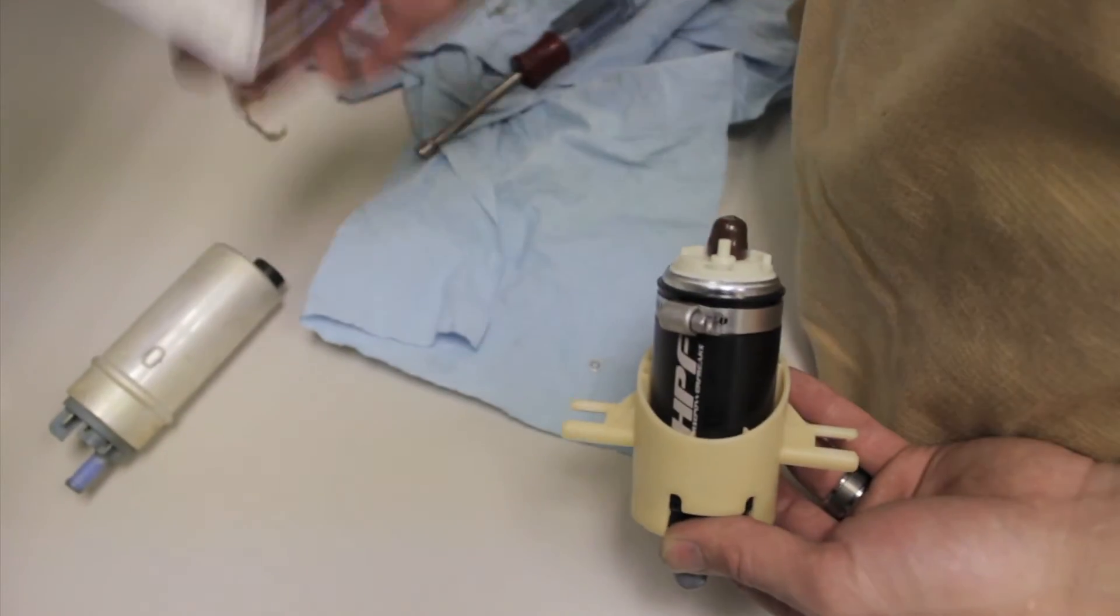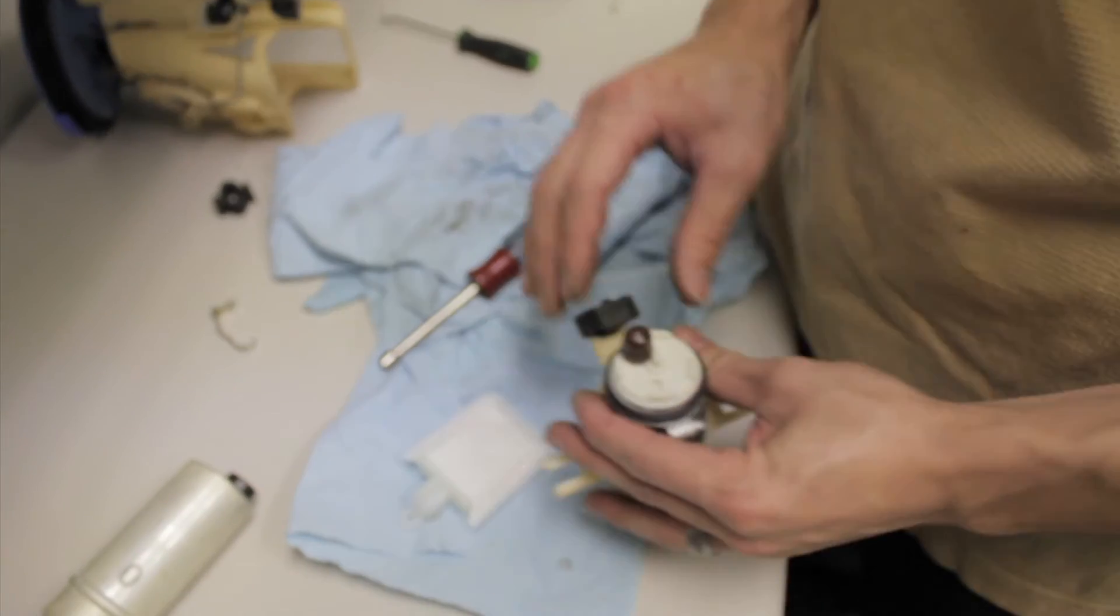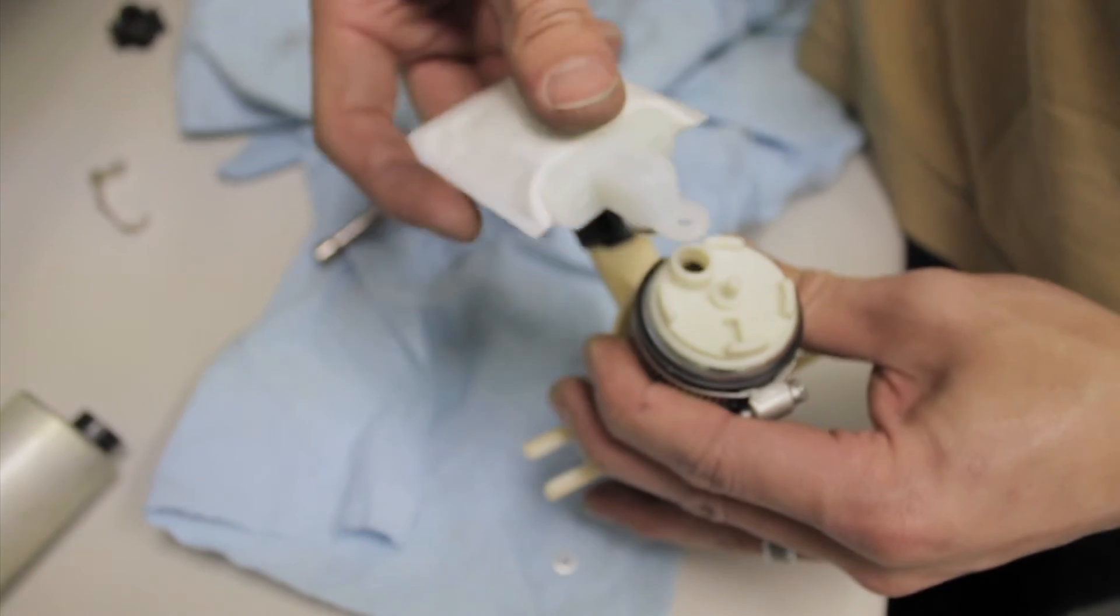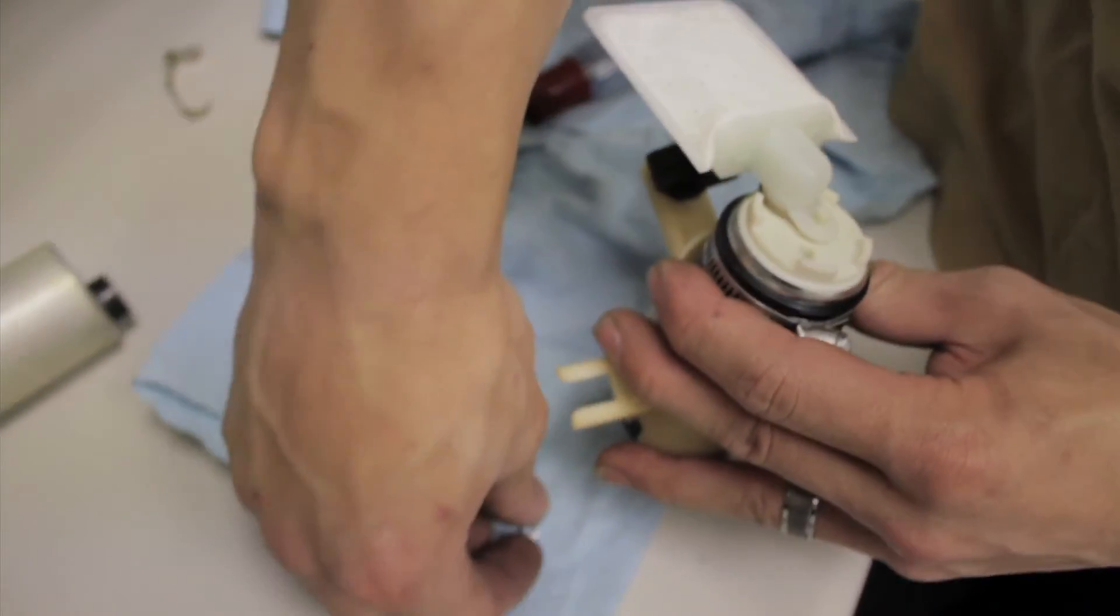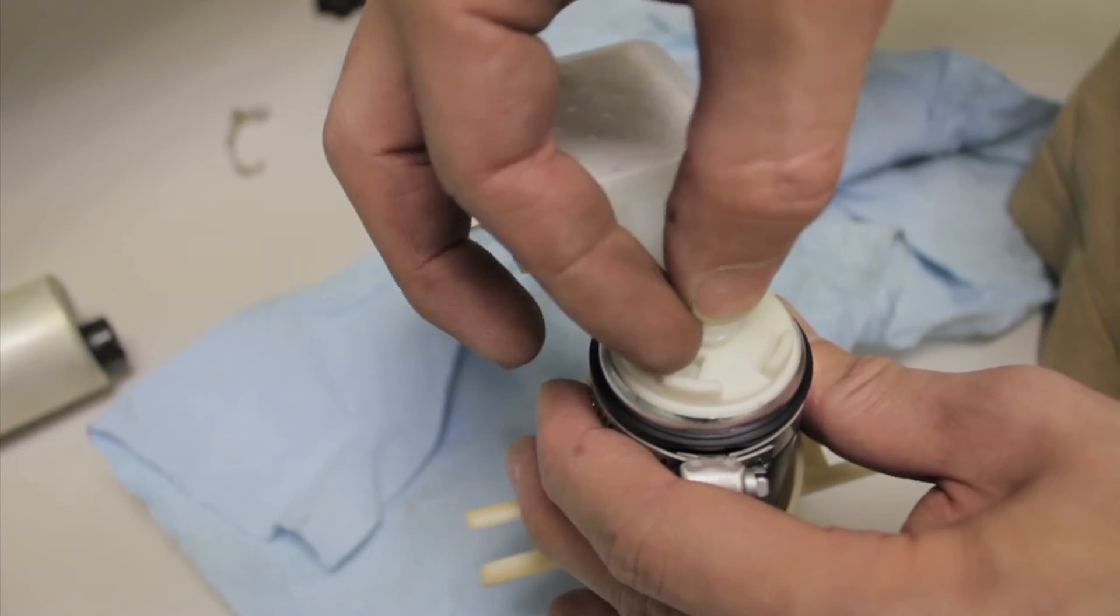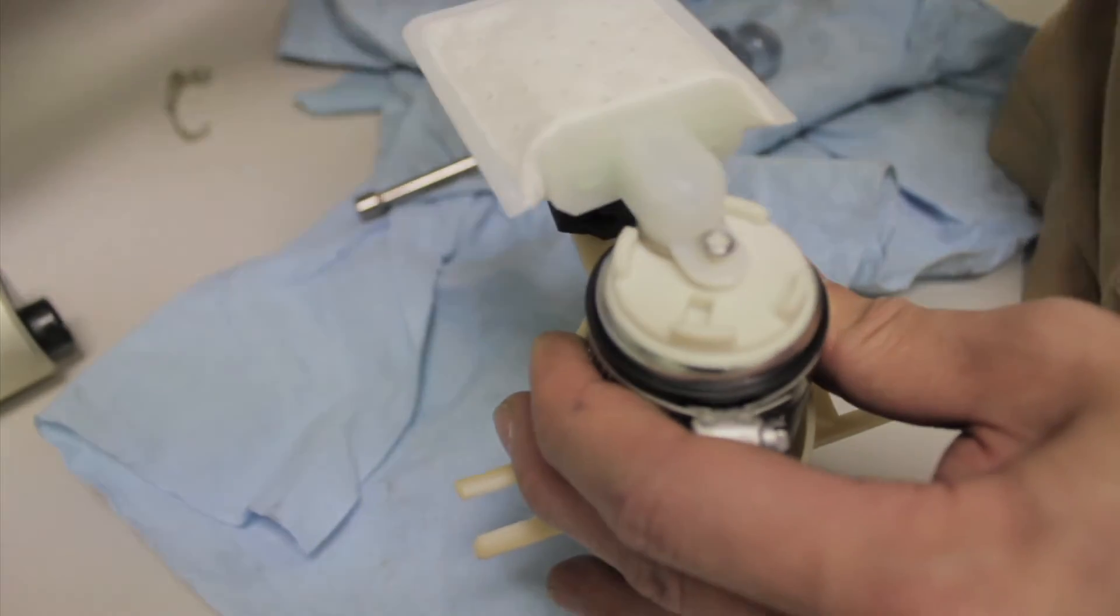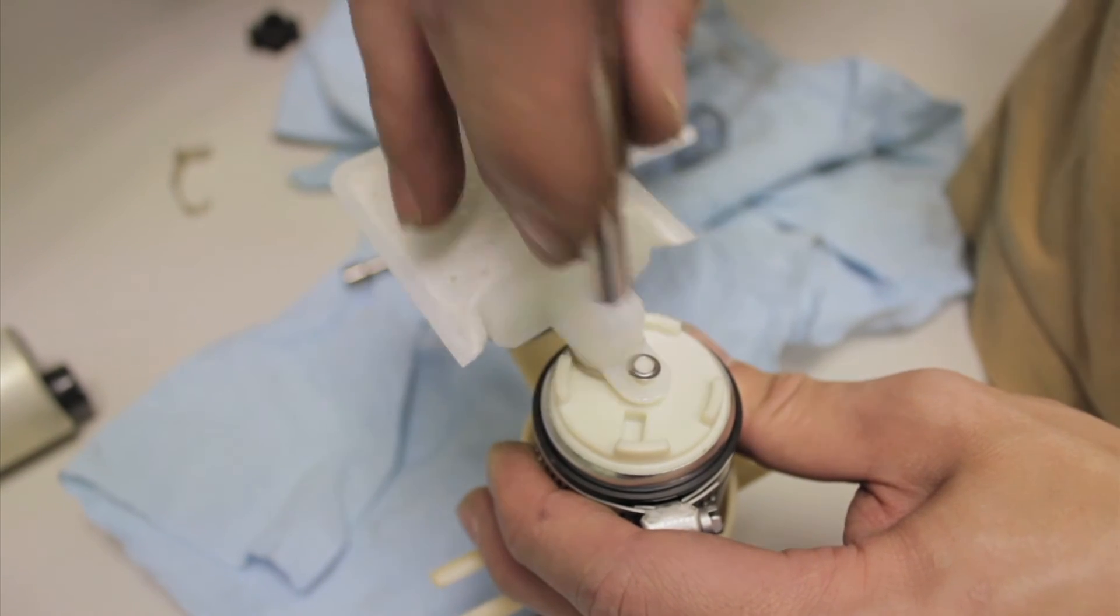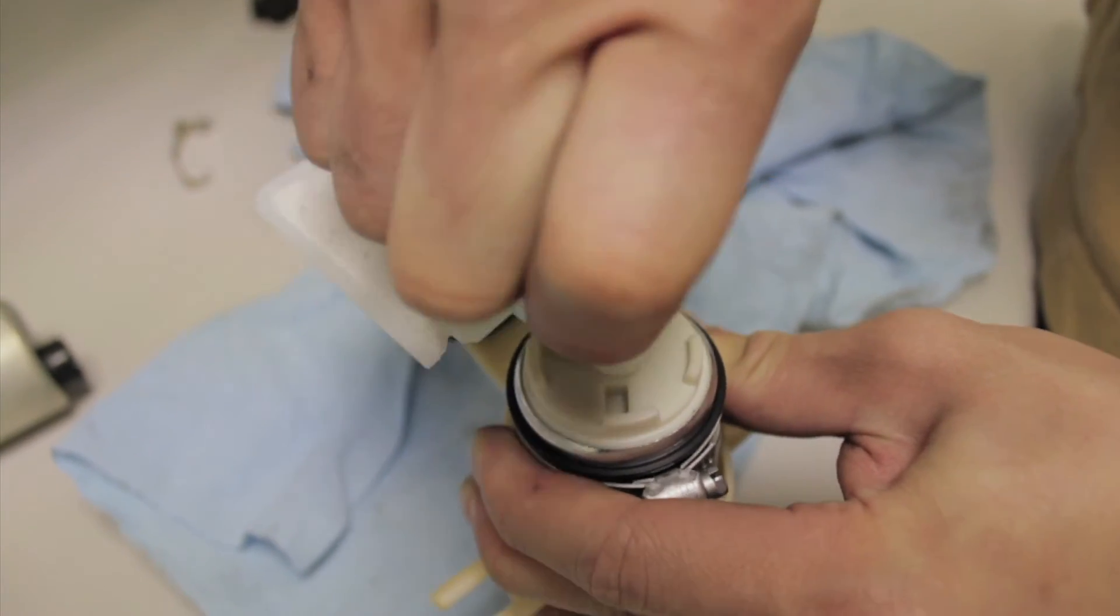Now what we're going to do is install the pickup sock onto the end of the Walbro pump. So remove the cap. The sock only goes on in one direction. This very small ring is actually what keeps it on. Now that socket that we needed to get earlier, this is where it comes into play. It barely fits over this shaft because what you want to do is you put that ring on there and apply it with the socket.